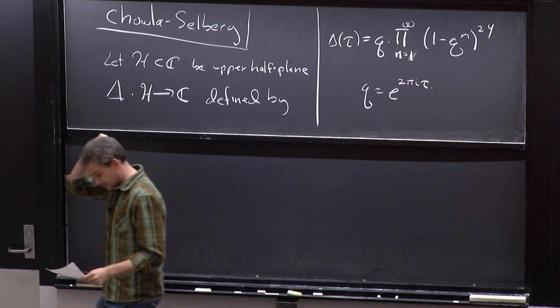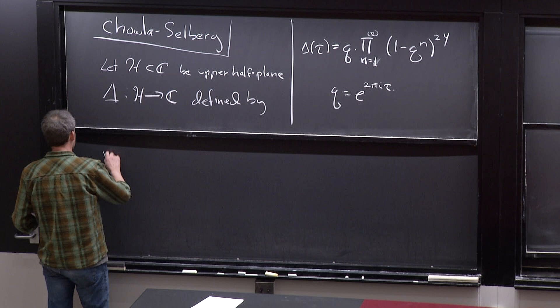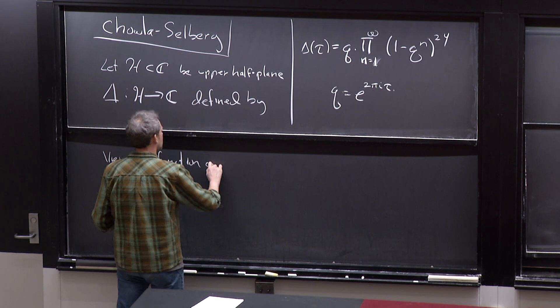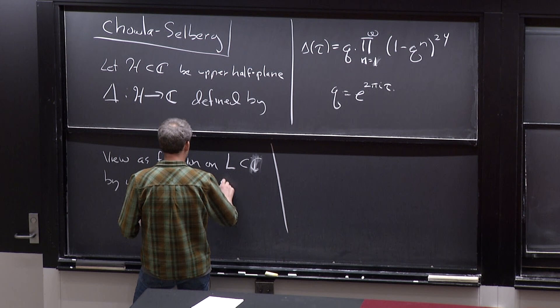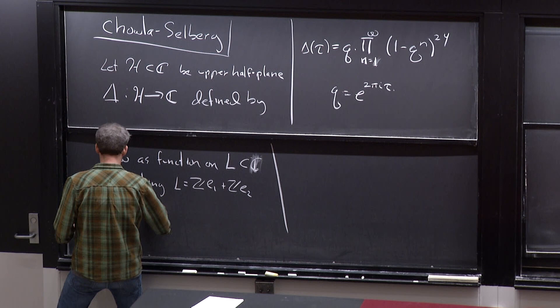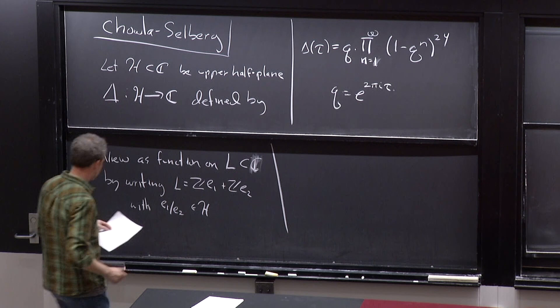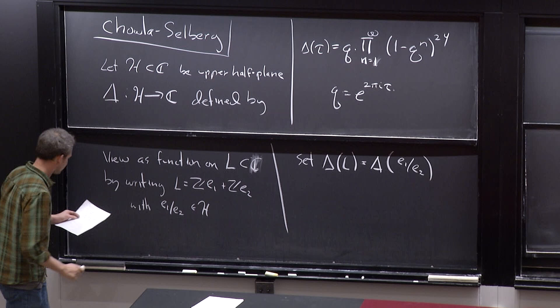This is the first example you learn of a modular form, and when you first learn about modular forms, you learn that they can be viewed as homogeneous functions on the space of lattices. I want to think of this as a function on the space of lattices in the complex numbers. Any lattice — you write it as Z e1 plus Z e2 — and you can always choose generators such that e1 over e2 lies in the upper half plane. Then you evaluate Ramanujan's discriminant there: delta of L equals delta of e1 over e2.